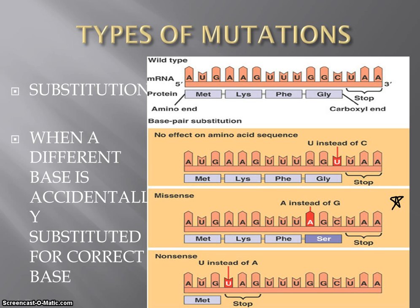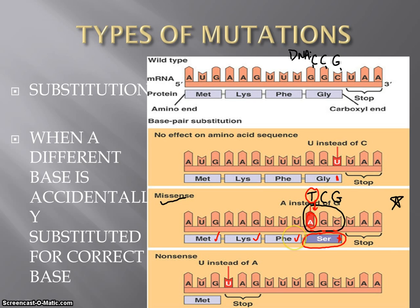Now looking at the second column, what's called missense. In this case, focusing on our next-to-last codon, which was originally GGC — meaning in our DNA it would have been CCG — there was a mistake: that first base was mutated, changed to T, making the DNA TCG. This change led to an adenine in our mRNA, so the codon now becomes AGC, which codes for a totally different amino acid. Looking this up on our wheel: serine instead of glycine. We still have methionine, lysine, and phenylalanine, but we have changed our protein. Changing that amino acid might change the shape of the protein and therefore change its function and properties. This is called missense.